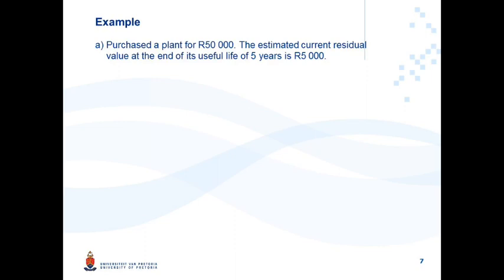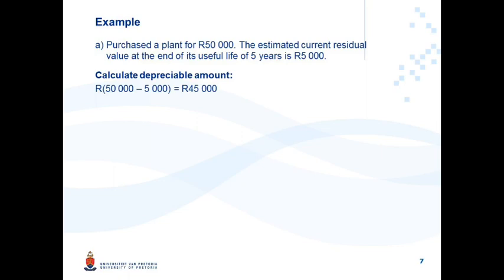Example: You purchased a plant for 50,000 rand. The estimated current residual value at the end of its useful life of 5 years is 5,000 rand. The depreciable amount will be: cost of 50,000 less residual value of 5,000, giving a depreciable amount of 45,000 rand.